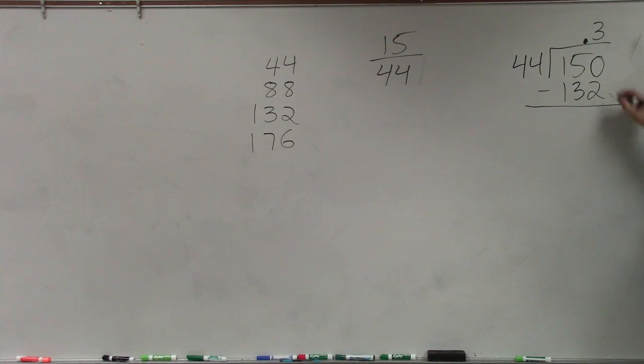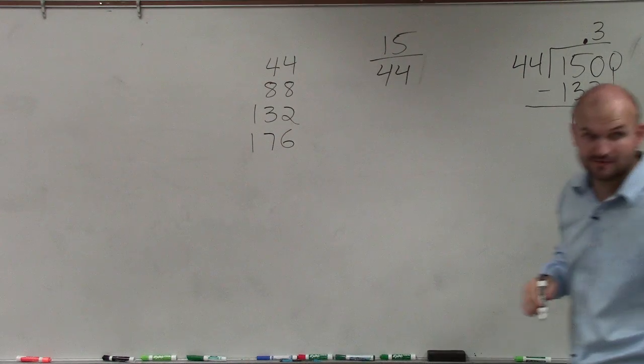Again, subtract. 150 minus 132 is 18. Bring down another 0, because we have unlimited zeros after the decimal point.